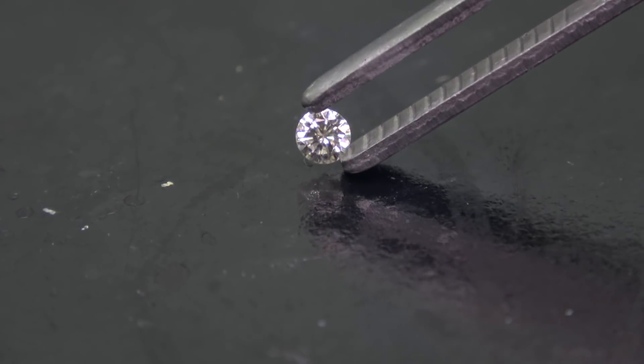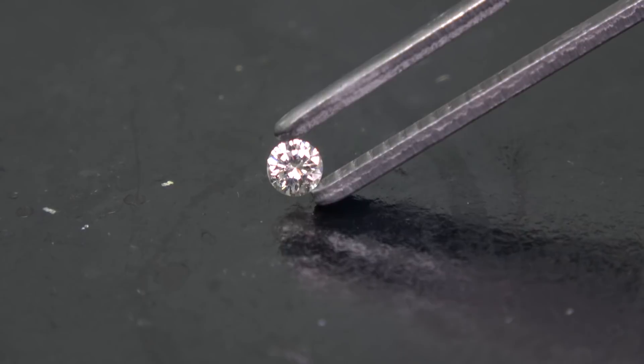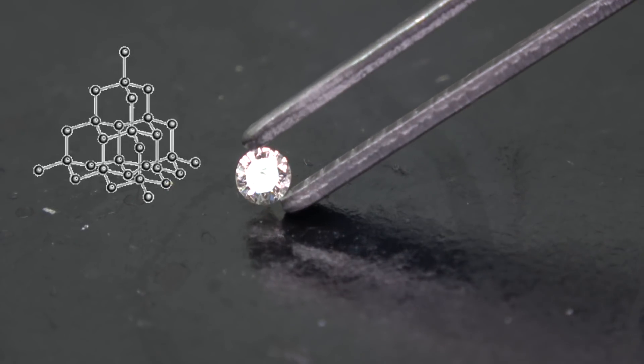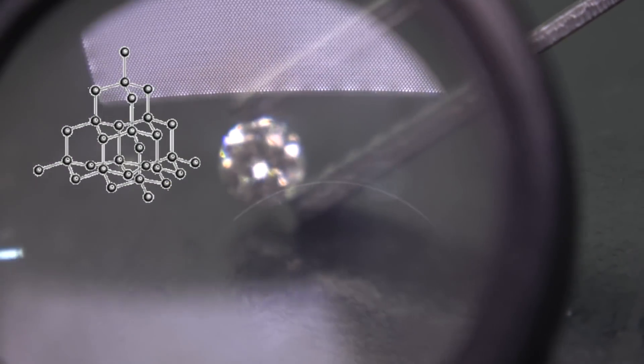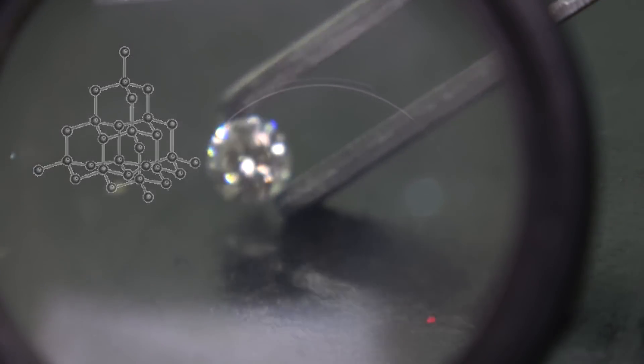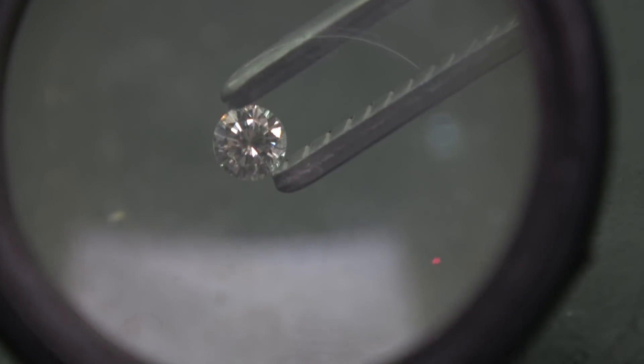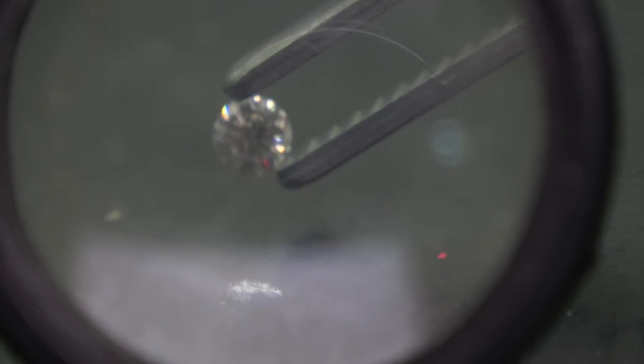Chemically speaking, diamonds are carbon atoms that are arranged in a tetrahedral-shaped formation. The network covalent bonding is one of the strongest chemical bonds in existence. But is diamond completely inert?